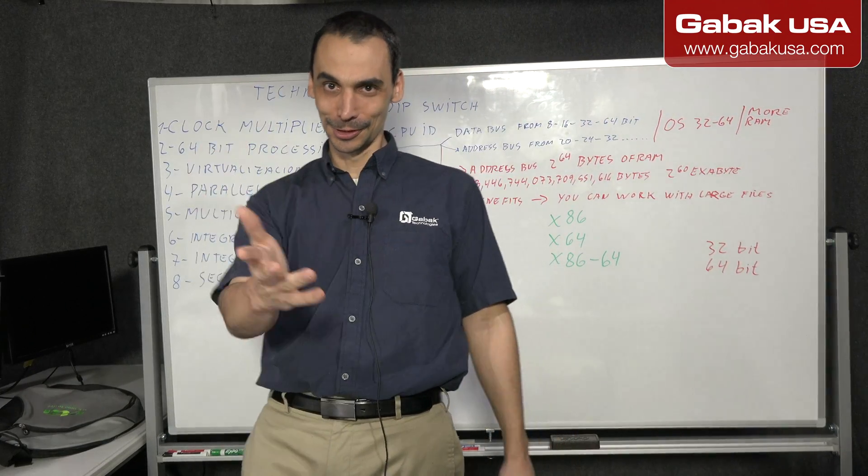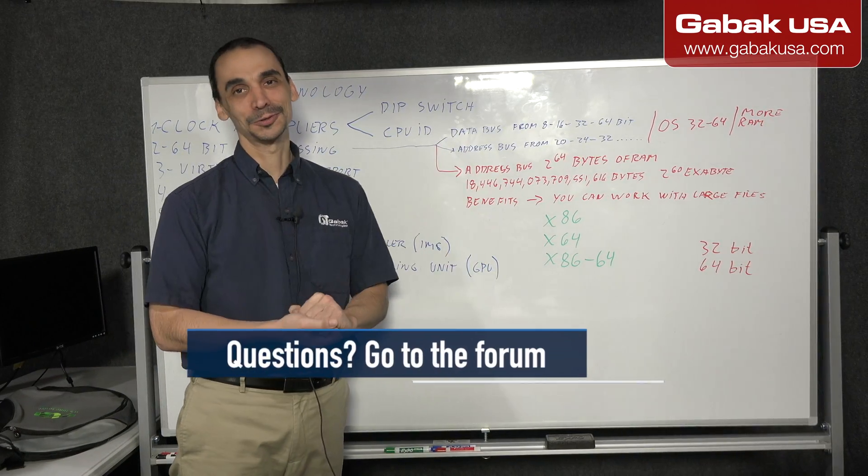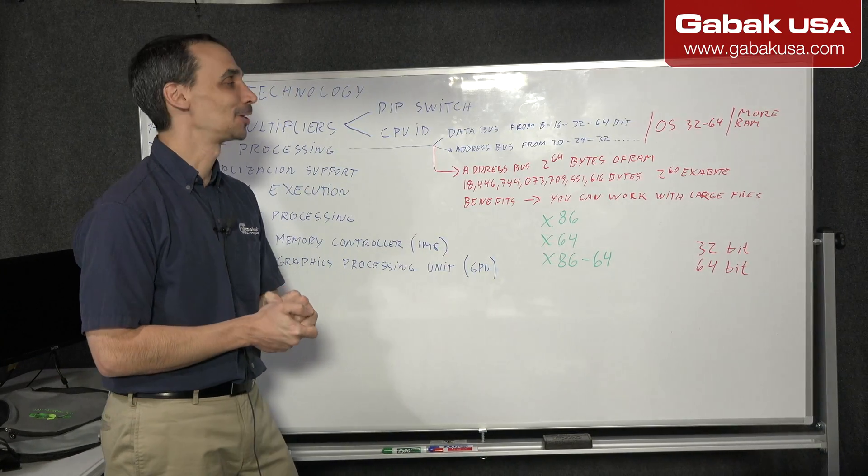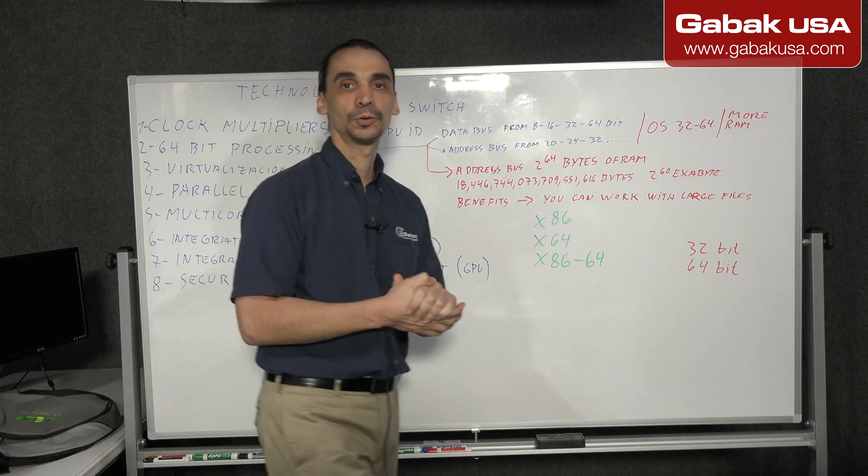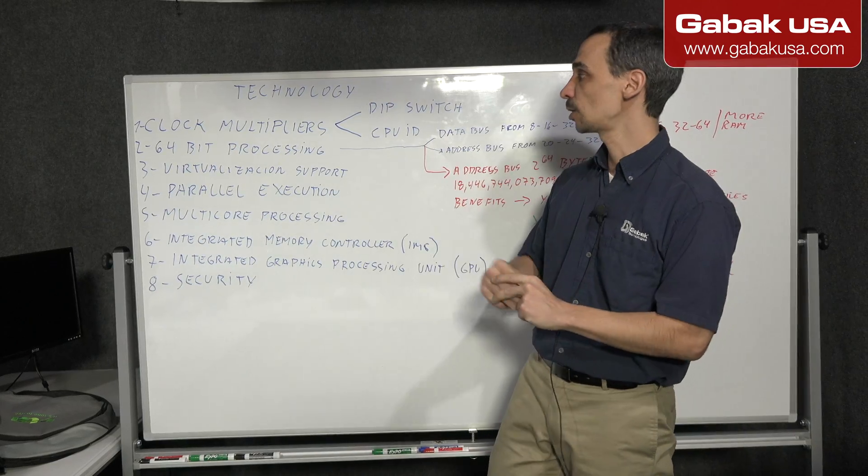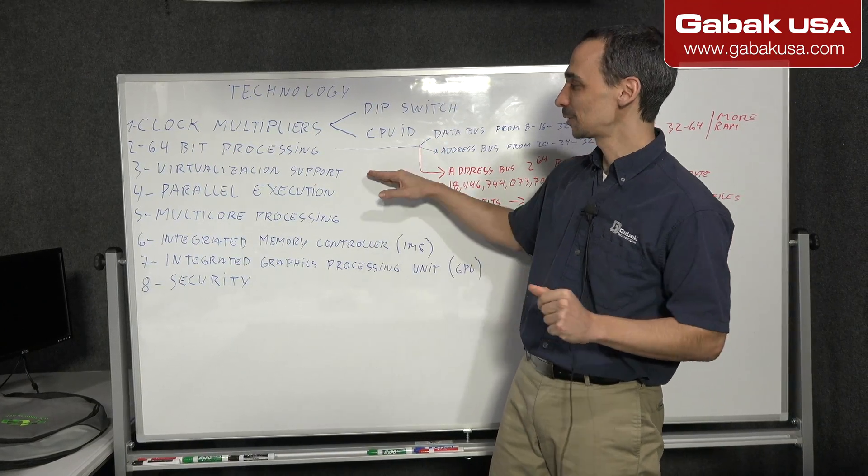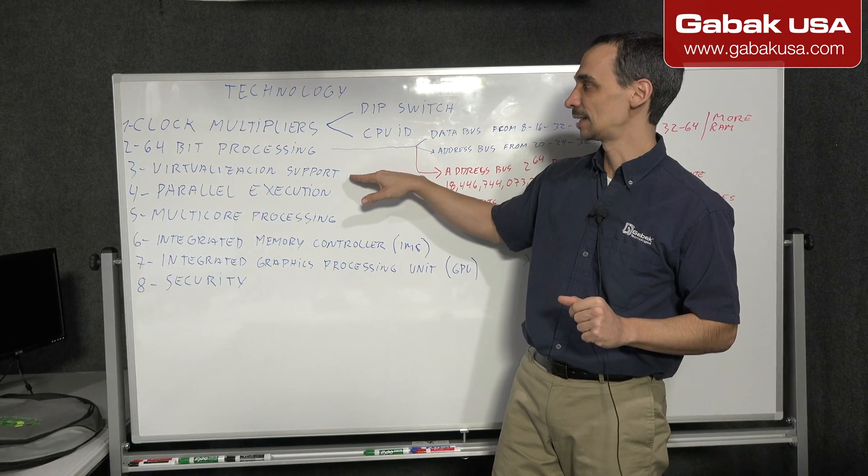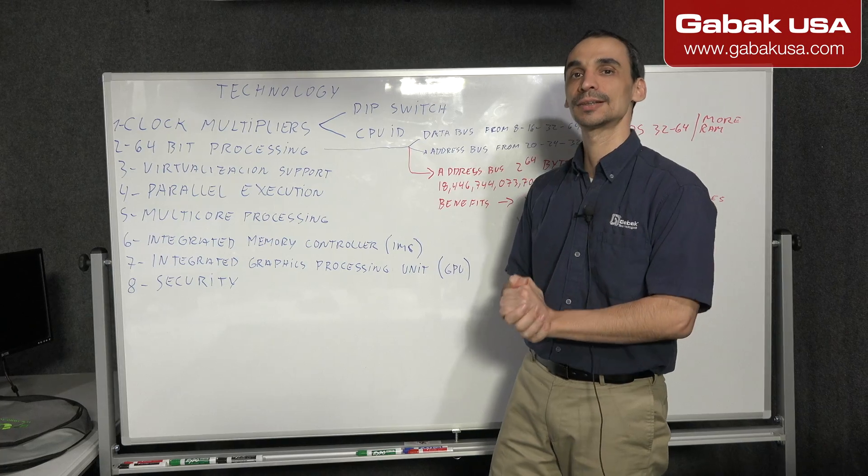That is one thing that you have to think when you are choosing a CPU. If you have a very old computer, do it that way and then buy a new one. Try to not use old computers. Usually they are very slow. We are going to continue in the next class talking about virtualization support and the rest of the subject that you see here.